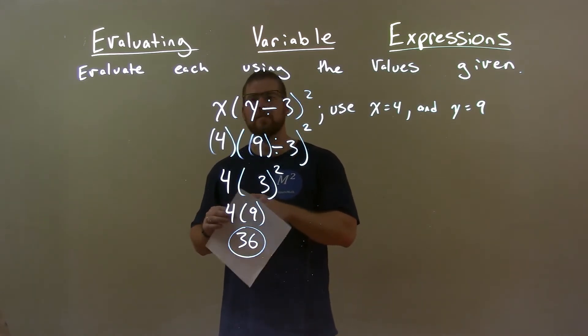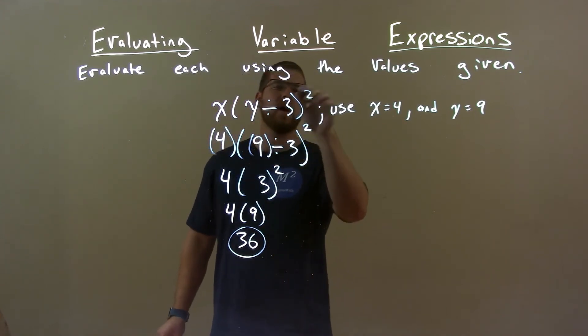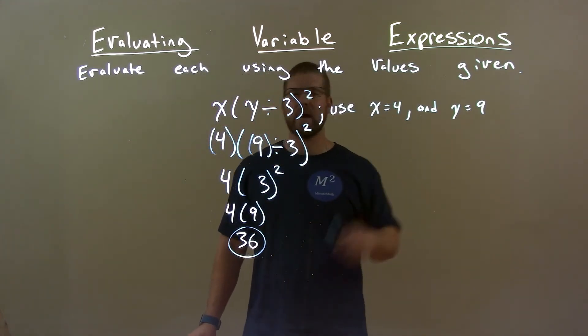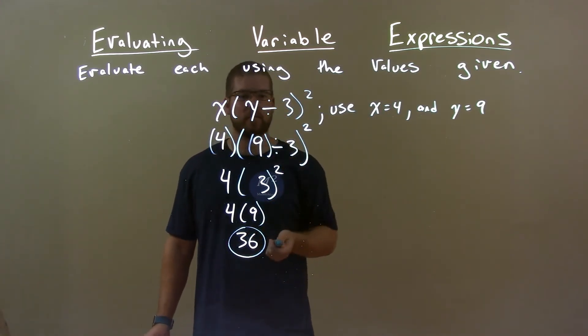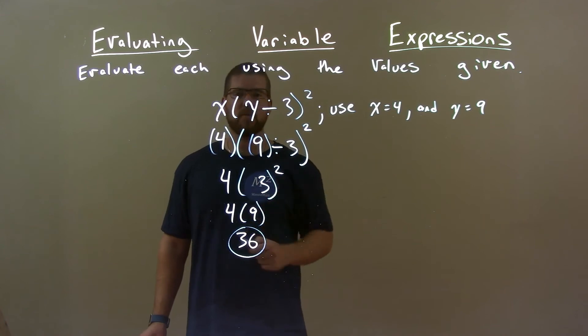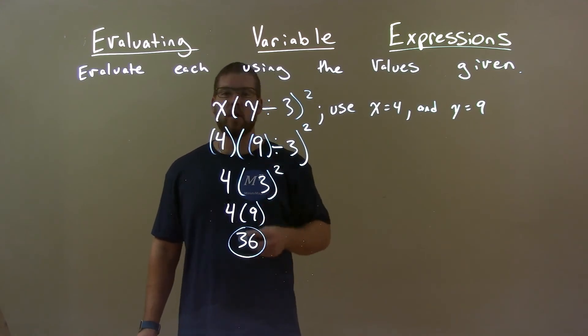It's a quick recap. We're given x in parenthesis times y divided by 3 squared. x is 4, y is 9. Substitute our values in. 4 for x, y for 9. Then, we simplify. 9 divided by 3 is 3. 3 squared is 9. 4 times 9 is 36. So, 36 here is our final answer.